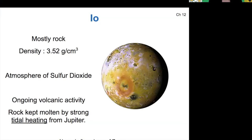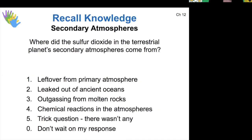So I want to take a step back and think about Io's atmosphere here because the secondary atmospheres of the terrestrial planets formed in a way. What was that way?